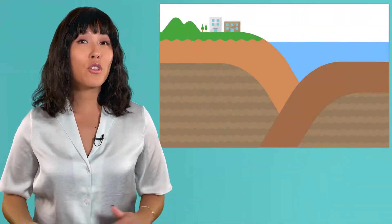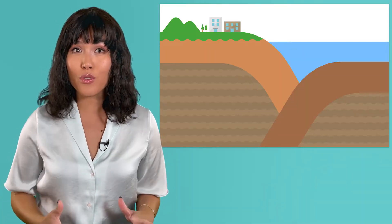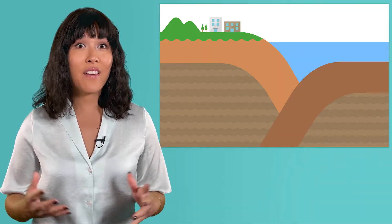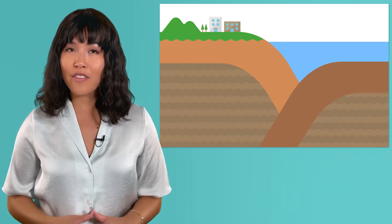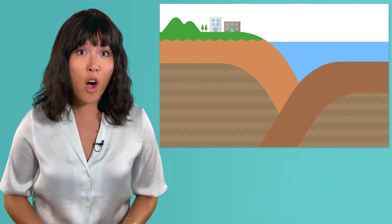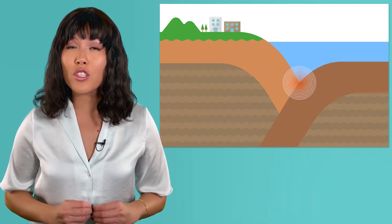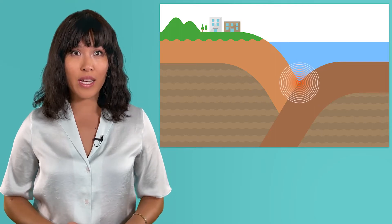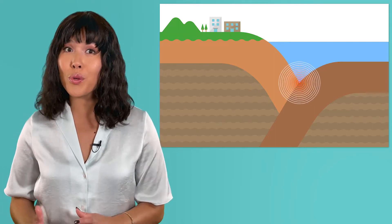And when a tremor starts at a fault like the Aleutian subduction zone, it can have a different set of effects. After all, this fault is underwater. That means it wasn't just the ground shaking during this earthquake, the ocean floor moved too.